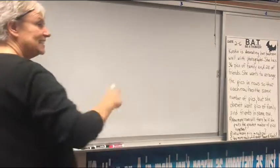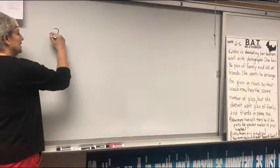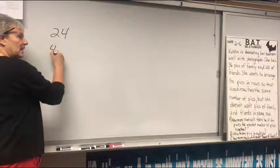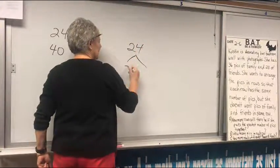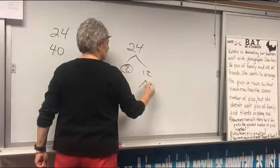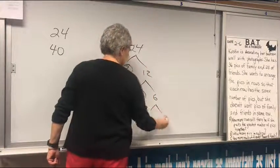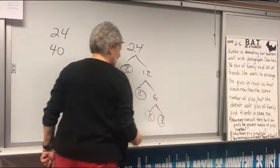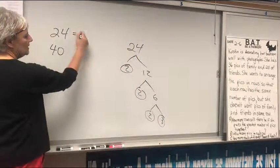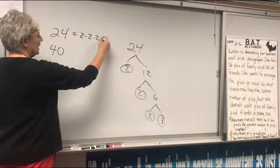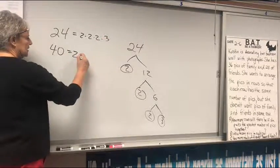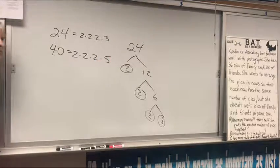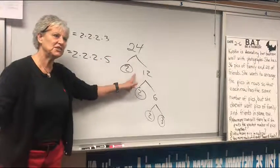Number 19 on the homework was 24 and 40. Do you remember doing factor trees? 2 times 12, 2 times 6, 2 times 3. You've done that for years.